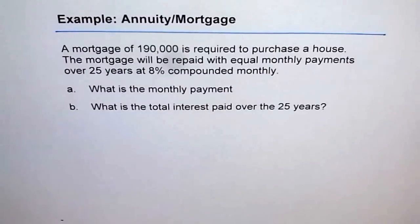What is the monthly payment? That means the value of R in our formulas, the recurring amount, the fixed amount, the annuity which you pay regularly. That is what we are asking for here. Part B is what is the total interest paid over the 25 years.